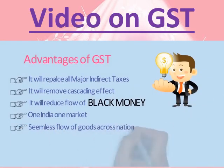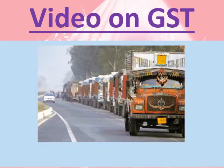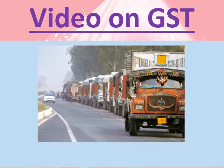Seamless Flow of Goods Across the Nation: On many occasions you might have seen long lines of trucks on both sides of a state border, sometimes running into miles, having to pay entry tax or octroy. Every time goods are moved from one state to another, taxes are paid at the border. According to a Road Ministry study, a typical truck spends nearly 16% of its time at checkposts or toll plazas, including stops to pay tax just to pass through a state. GST will result in easier transportation of goods by replacing CST and octroy, and will reduce transportation and logistic costs greatly.